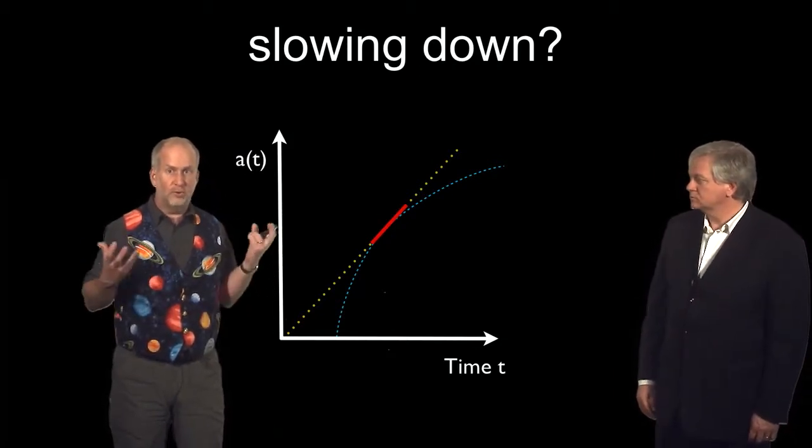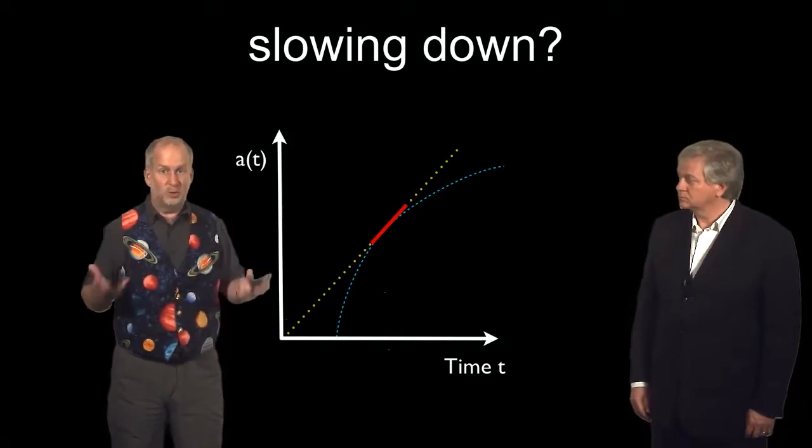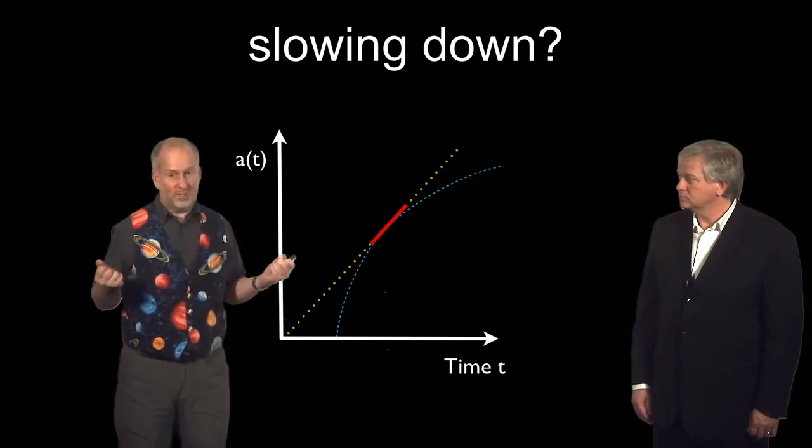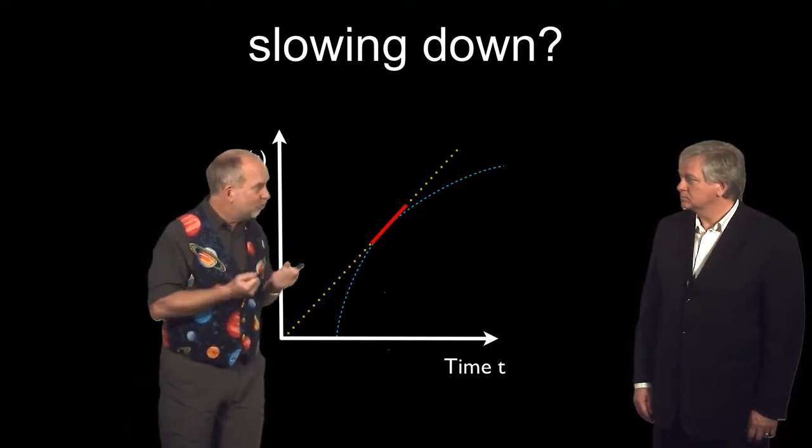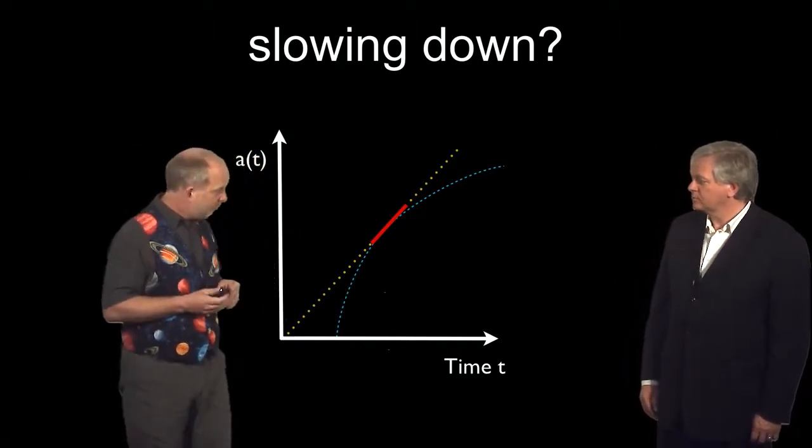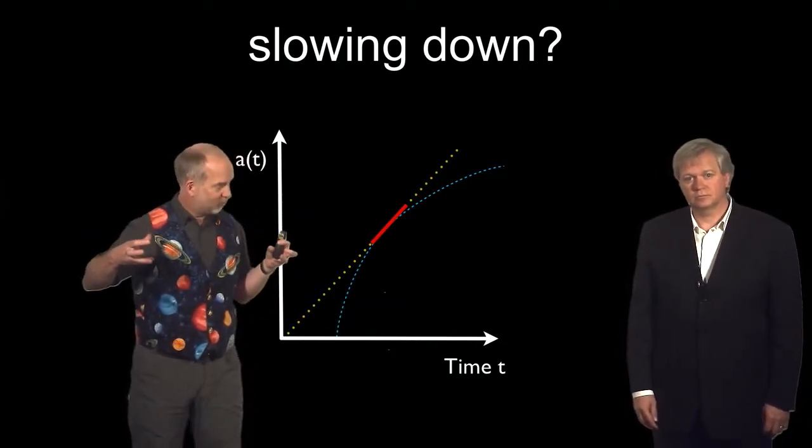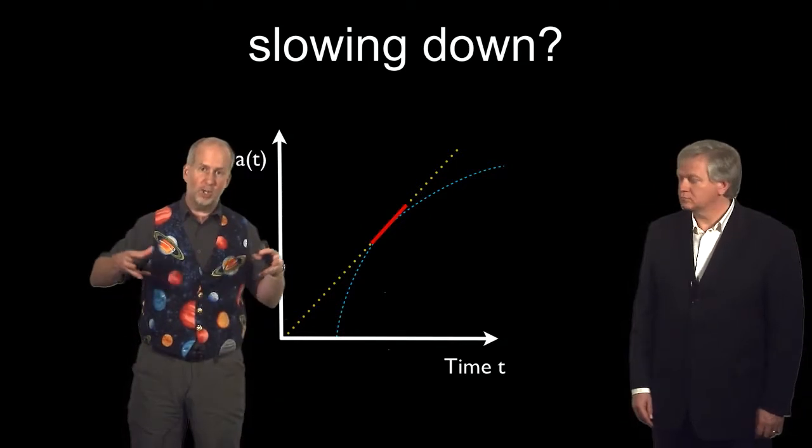But in fact the universe is full of things which have mass, and mass means there's gravity, and gravity sucks. It's a force that pulls things towards each other always. So in fact what you'd expect is as things moved apart gravity will try and pull them back together again, so the expansion rate will actually slow down.